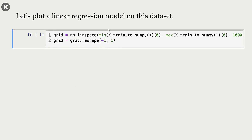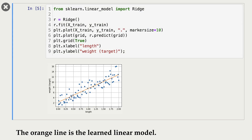Now let's train a linear regression model using scikit-learn and plot it. This orange line is our model. Now given a new example — that is, given a new length — how do we predict the corresponding target? Suppose we are given the new length 1.5. We predict the target by looking at the corresponding point on the orange line, and that's going to be our target.